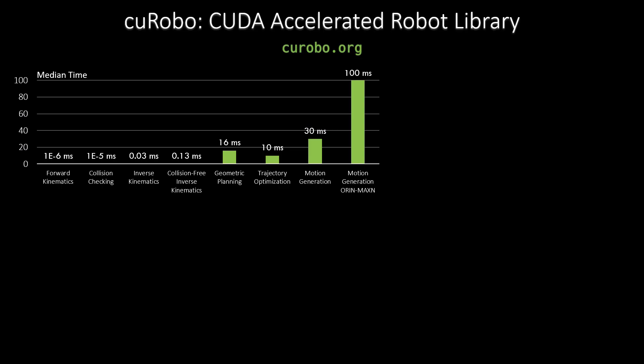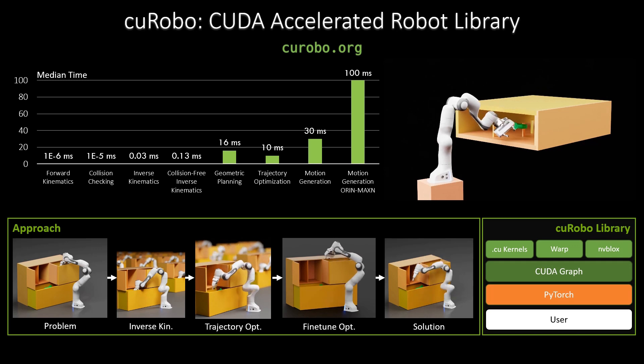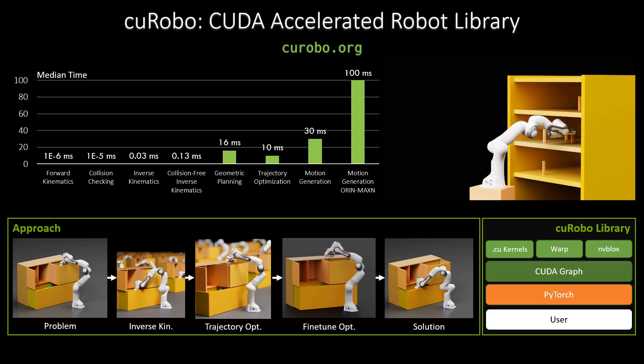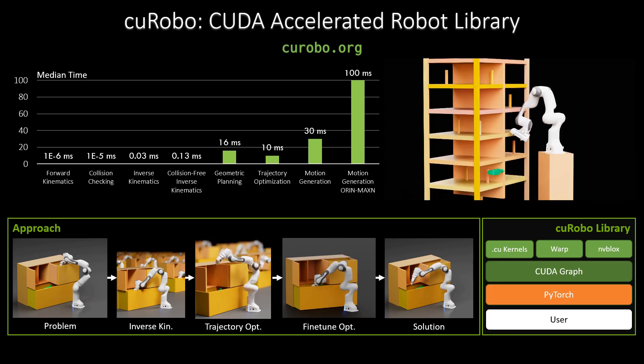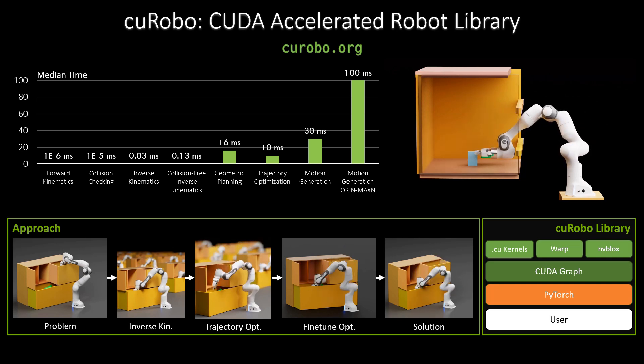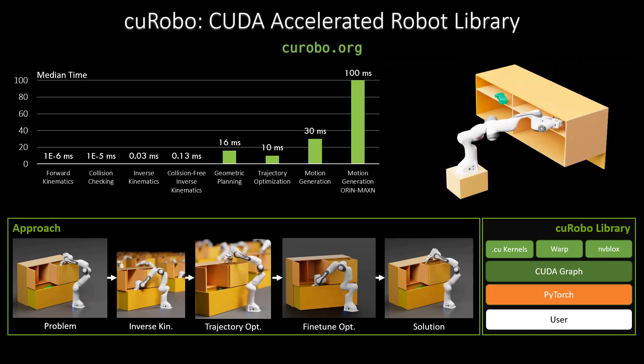The median time across different modules in Kurobo are shown with timings ranging from one nanosecond for forward kinematics to 30 milliseconds for motion generation on a PC. Visit our website for more details. We provide many examples in NVIDIA Isaac Sim to get you started.